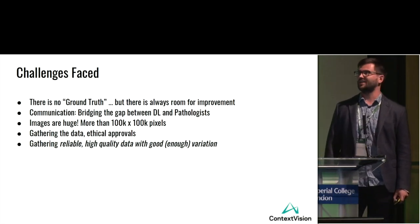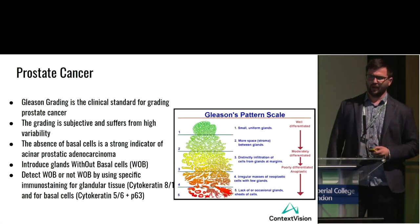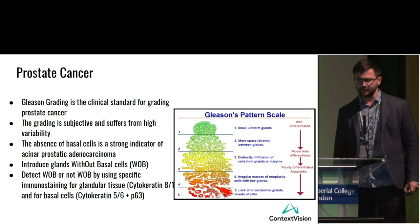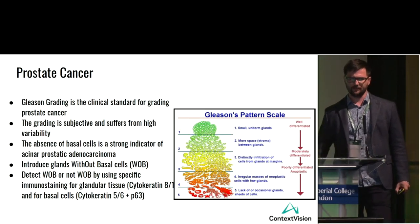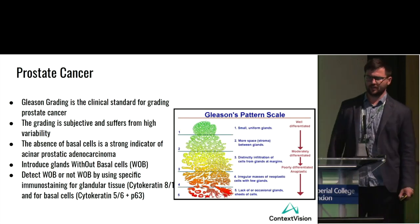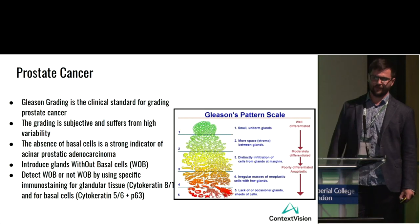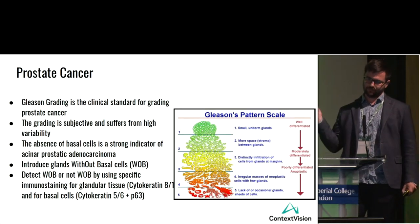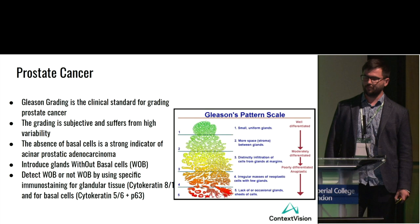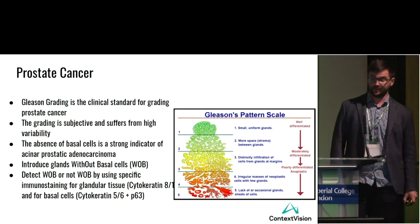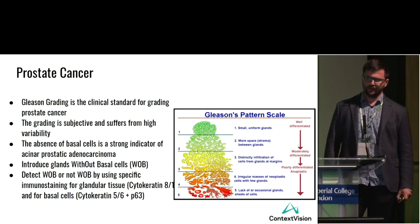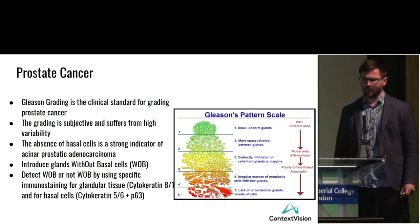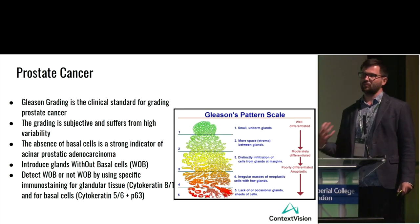To introduce prostate cancer: Gleason grading is the clinical standard for grading prostate cancer, but it is very subjective and suffers from high variability. The absence of basal cells in glands is a strong indicator of prostate adenocarcinoma. We introduced glands without basal cells as a key concept — if a gland has no basal cells, we consider it potentially cancerous.